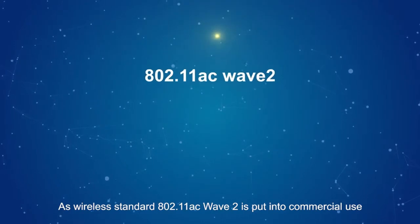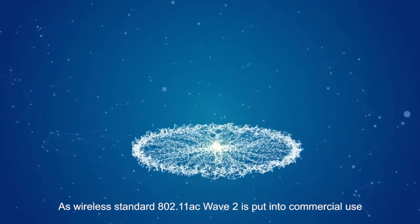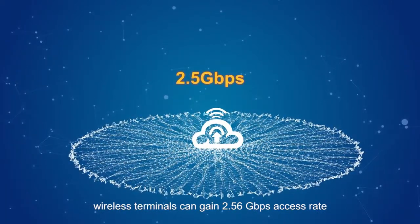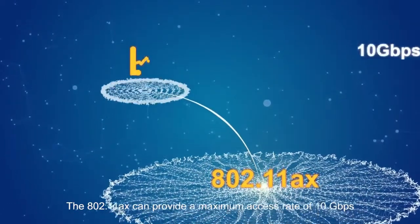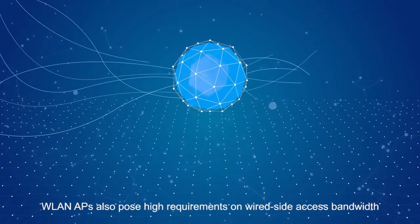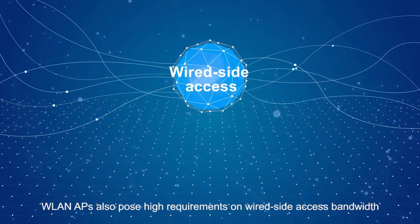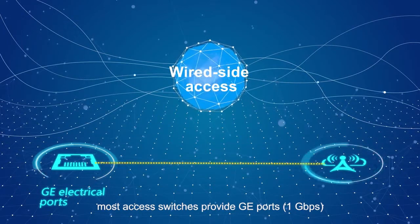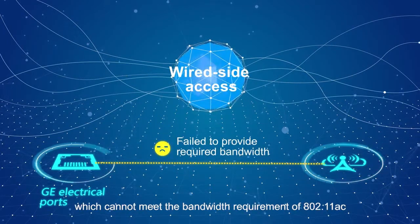As wireless standard 802.11ac Wave 2 is put into commercial use, wireless terminals can gain 2.56 gigabytes per second access rate. The 802.11ax can provide a maximum access rate of 10 gigabytes per second. WLAN APs also pose high requirements in wired-side access bandwidth. Currently, most access switches provide GE ports at 1 gigabit per second, which cannot meet the bandwidth requirement of 802.11ac.